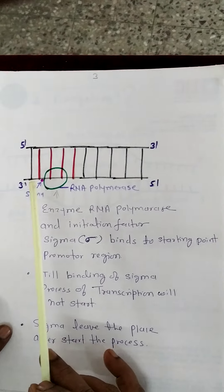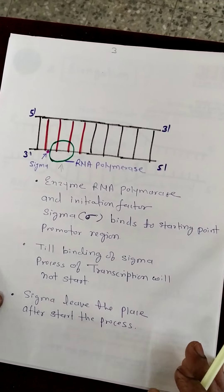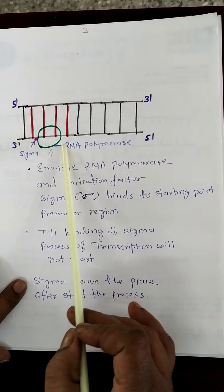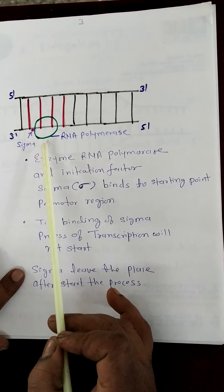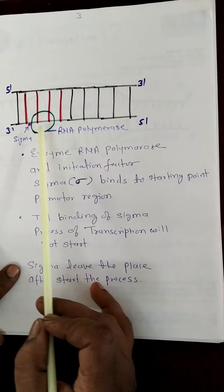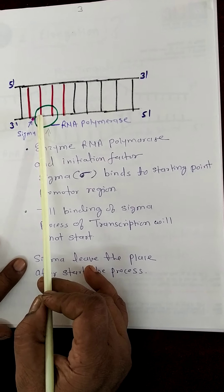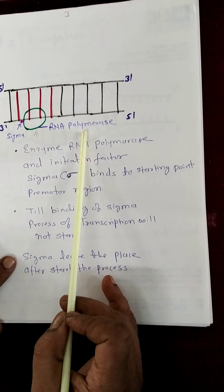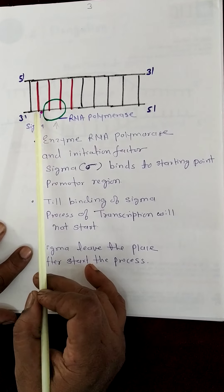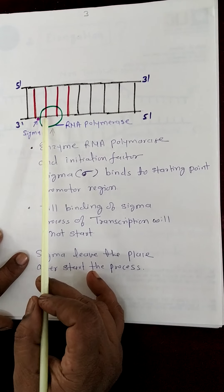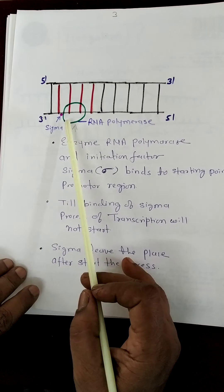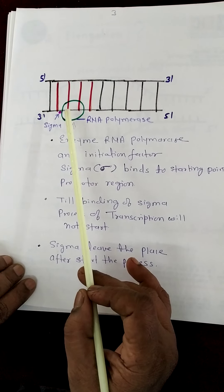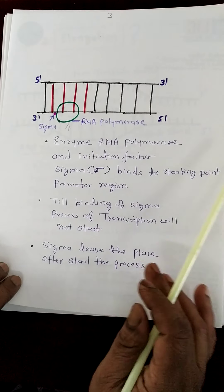When transcription starts, there is a specific region called the promoter region. The enzyme RNA polymerase comes and binds to this portion, and with RNA polymerase, a special factor called sigma is required. Without sigma, the process of transcription will not start. The starting of the transcription process is called initiation.